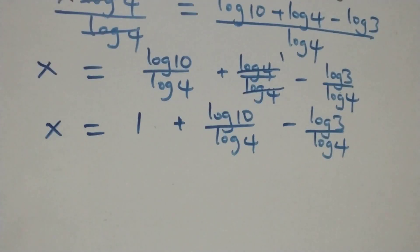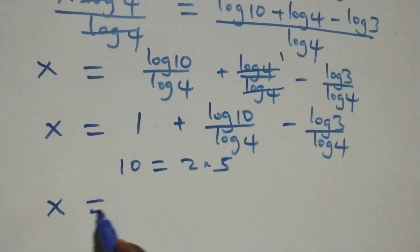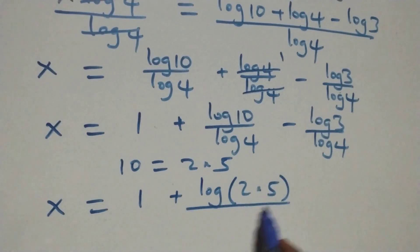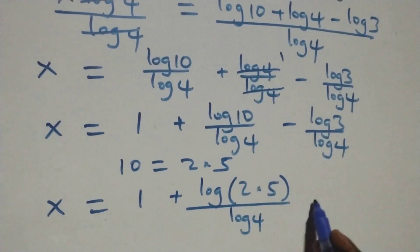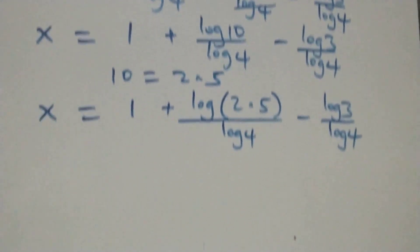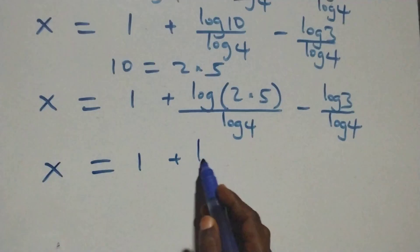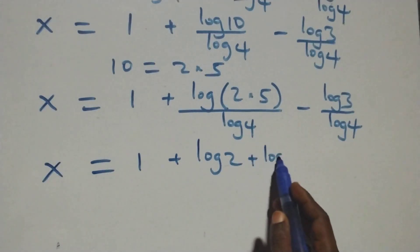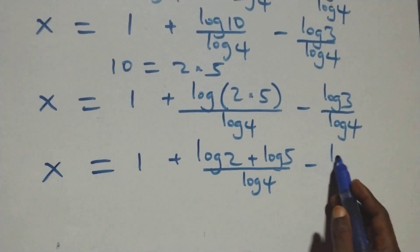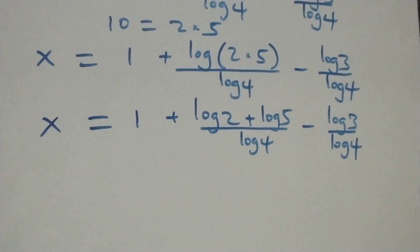That is x equals 1 plus log 10 over log 4 minus log 3 over log 4. Which implies, from here we can also write 10 as 2 times 5. So what we have becomes x equals 1 plus log 2 times 5 over log 4 minus log 3 over log 4. This also follows the law of logarithms and we can write it as x equals 1 plus log 2 plus log 5.